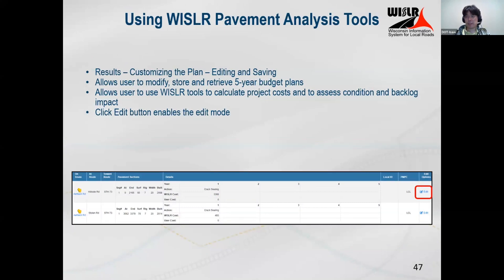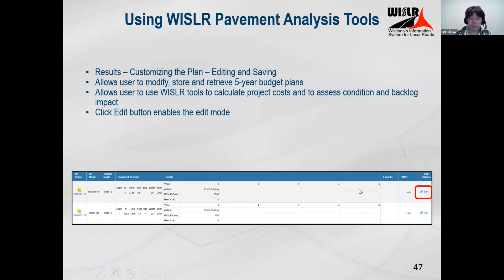There is customization you can do once you have the five-year plan generated. You can edit the plan by pressing 'edit' on the right-hand side of a road to change the year, action, or cost. You can change an action to a different activity, or move it to another year, or enter a user cost if you have your own estimate. If you don't change the cost but change the action, Whistler will automatically calculate what it thinks that action costs for that road segment.